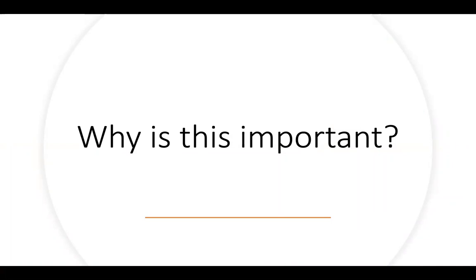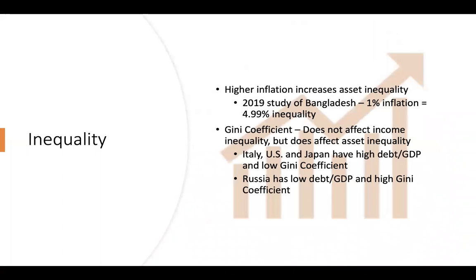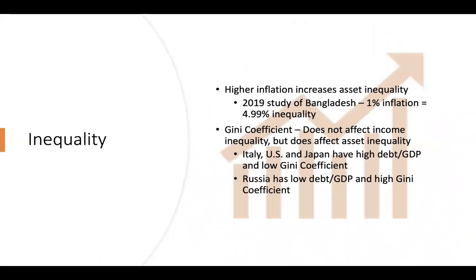The next question we were asked to answer is why this is important. We'll look at three different areas. The first one is inequality. We looked at an article titled 'The Impact of Inflation on Income Inequality of Bangladesh,' reported in June 2019. It found that higher inflation increases asset inequality. The authors reported that income inequality has become a major public issue all over the world, with the gap between the rich and poor rising each year.